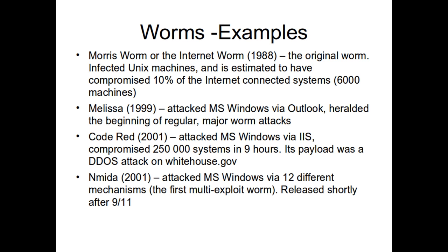Code Red was a big one — some of you may remember it happening. It attacked MS Windows via IIS, which is the Microsoft web server. It compromised about 250,000 systems in nine hours. Its payload was a DDoS attack on whitehouse.gov. This was not just 'can I write a worm and see how well it does' — this was an attempt to actually attack someone with really good code. The Morris worm, by contrast, was a test.